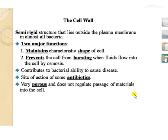The cell wall is very porous and does not regulate the passage of materials into the cells. The cell wall maintains the characteristic shape of cells — for example, cocci are spherical-shaped bacteria and their spherical shape is due to the cell wall. Bacilli are rod-shaped bacteria, and their rod shape is also because of the cell wall.